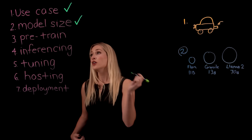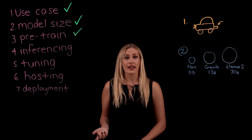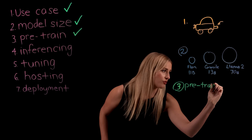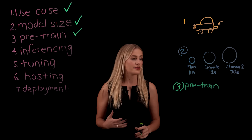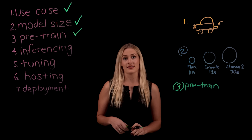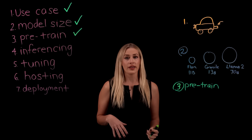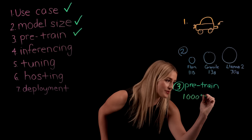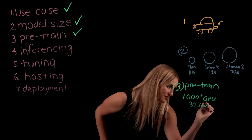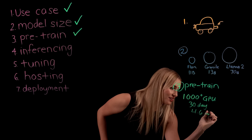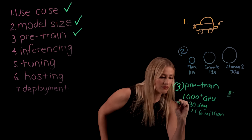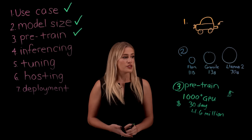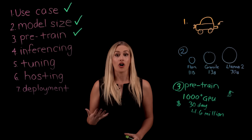The third cost driver is pre-training — the process of building and training a foundation model from scratch. This has been very cost-prohibitive for a lot of enterprises because it requires a tremendous amount of compute time and effort. Looking at GPT-3 as an example, it required over 1,000 GPUs over a 30-day period, costing over $4.6 million. This is why we only see a few key players that have taken on the challenge of pre-training LLMs from scratch. If you're not going to pre-train, you can leverage an LLM that's already been pre-trained.